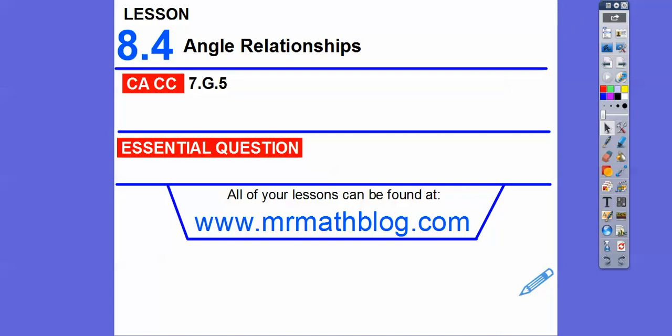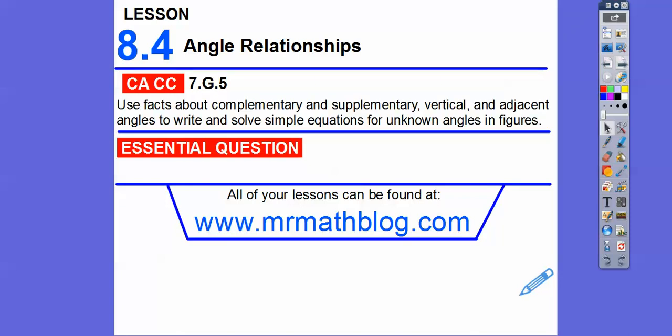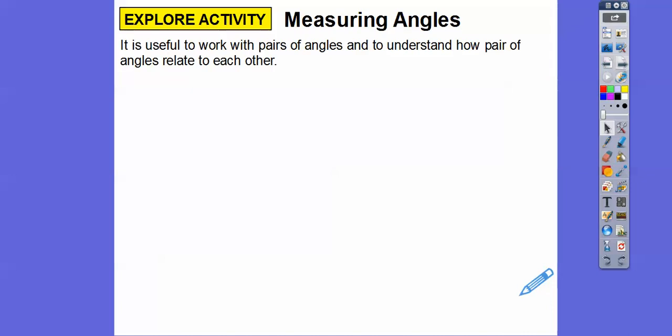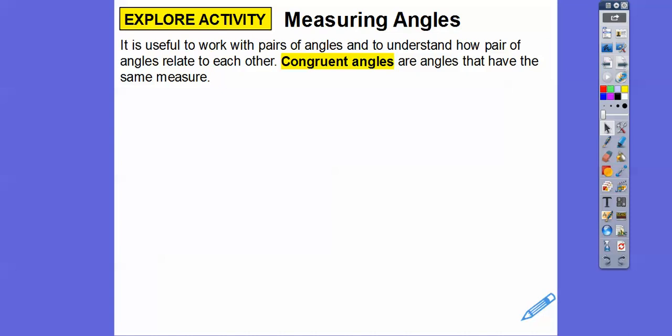Hey, everybody. This lesson is Angle Relationships. I'm going to go kind of fast because it's a long lesson. It's talking about pairs of angles and their relationships — specifically, using the fact about complementary and supplementary angles and adjacent angles to write and solve equations for unknown angles. It's useful to work with a pair of angles to understand how pairs of angles relate to each other.